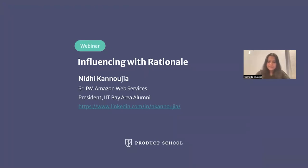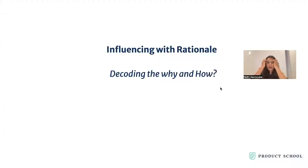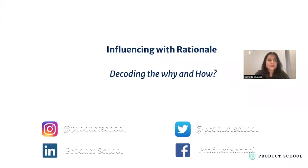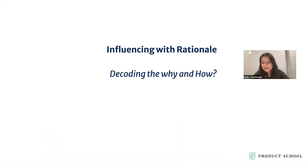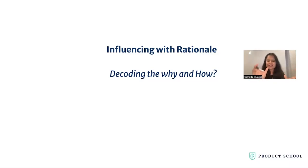What we'll talk about today is how you arrive at the 'why and how' piece of influencing with rationale. It is a very important part of our work to make sure we are leading toward the right outcome, making the right decisions, and executing while meeting timelines. Before we even talk about influence, there is a bigger body of work that goes on before and after it.